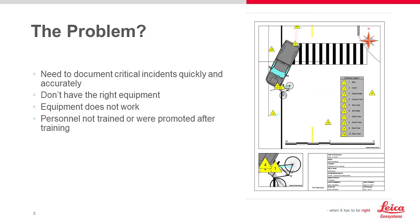Hey there, it's Glenn Davidson from MicroSurvey and Public Safety. Thanks for checking out my second video, a 10-minute explainer on Map 360 Sketch. The main problem we find agencies having is you need to document critical incidents quickly and accurately, but sometimes you don't have the right equipment, it doesn't work, or your people aren't trained — and once they are trained, they get promoted out.